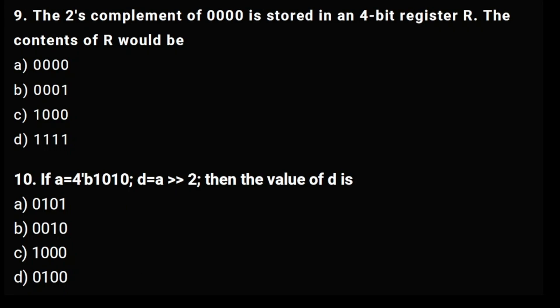Next question is very simple: The 2's complement of 0000 is stored in a 4-bit register R. The content of R would be what?